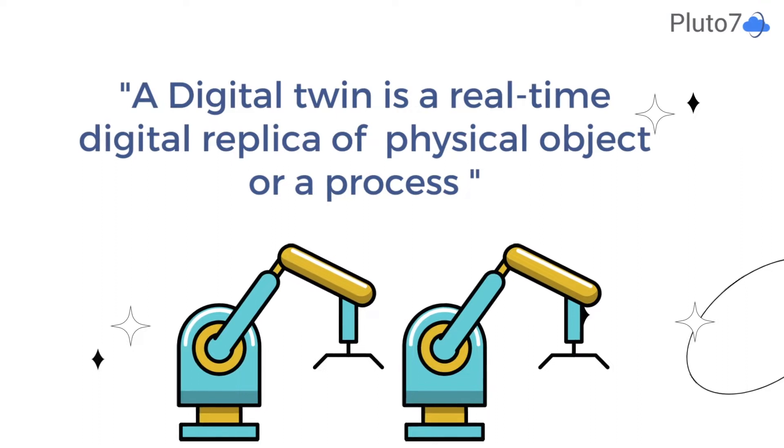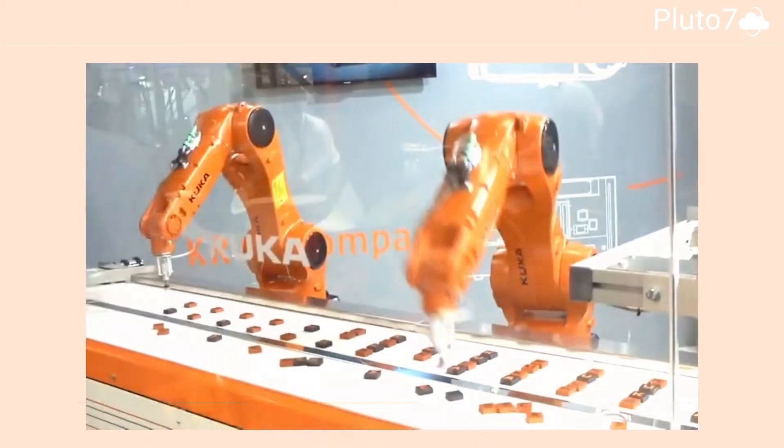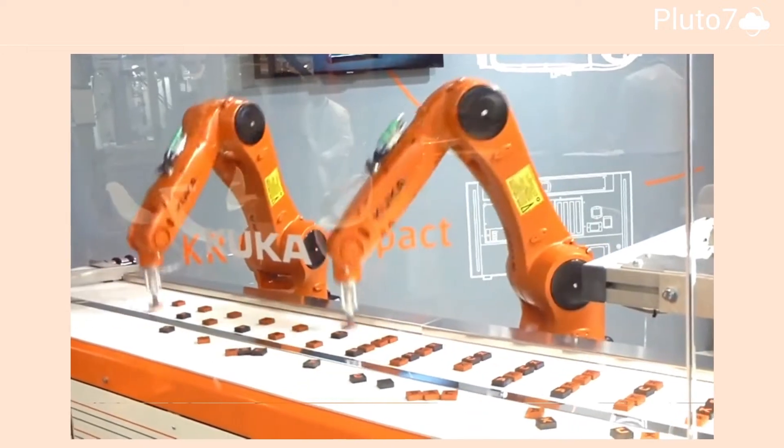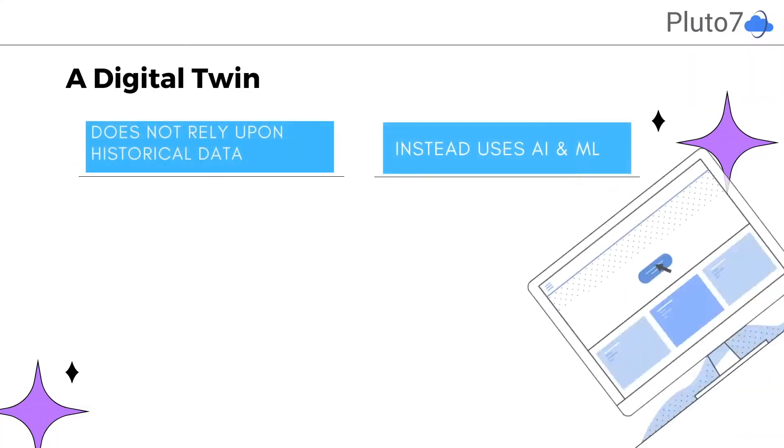A digital twin is a real-time virtual replica of a physical object or process. Digital twins are made possible through thousands of sensors constantly communicating with the model.